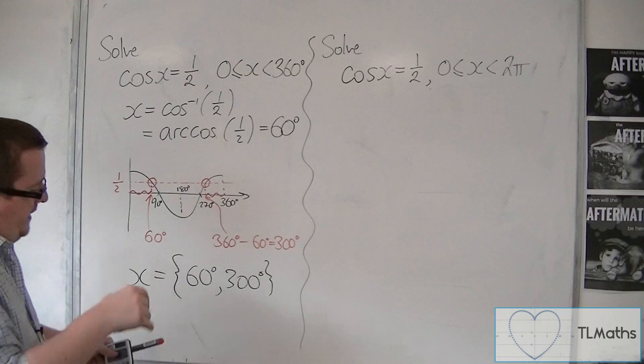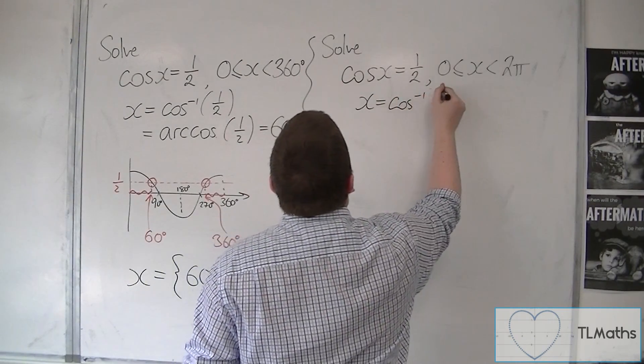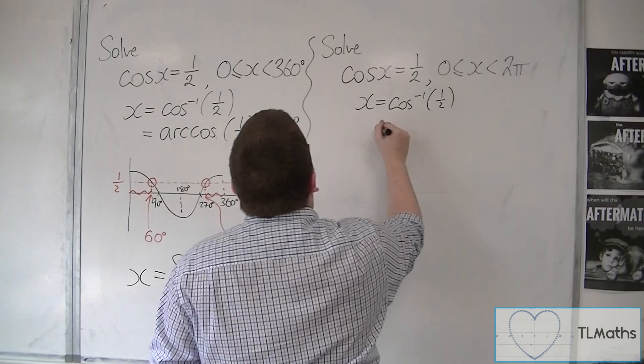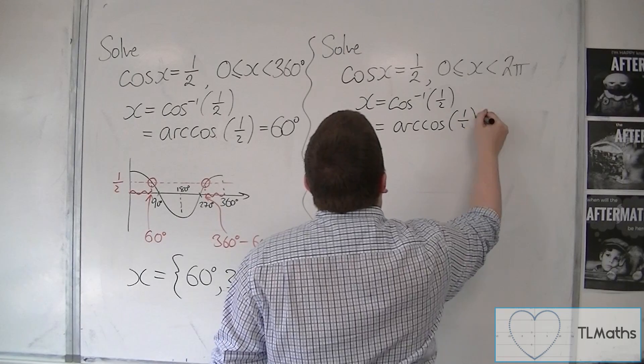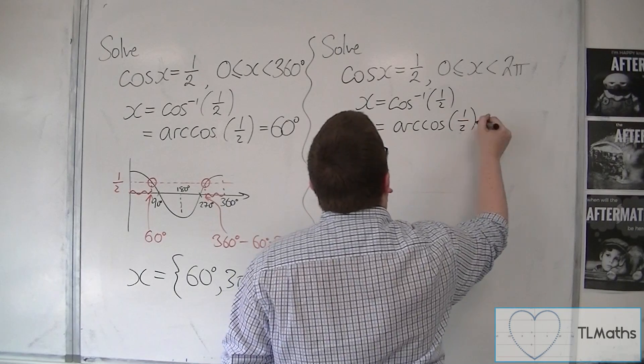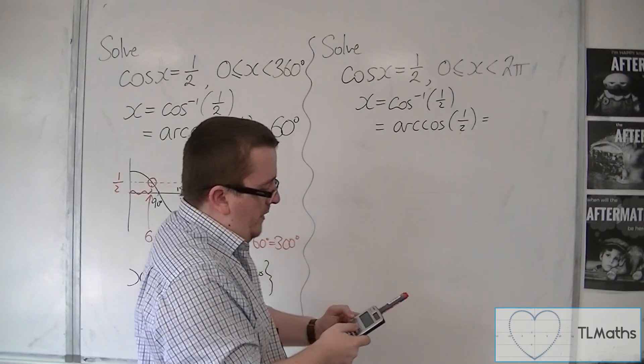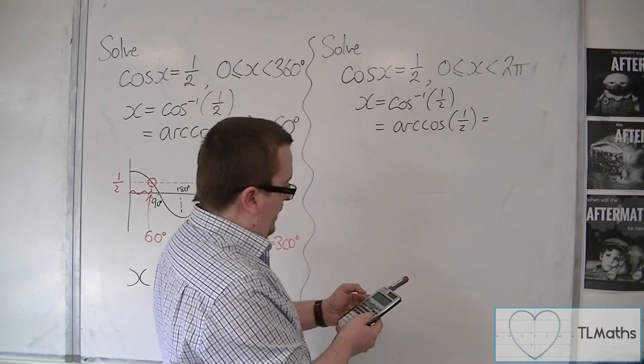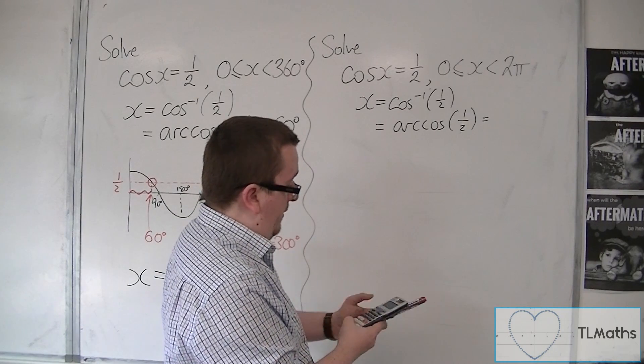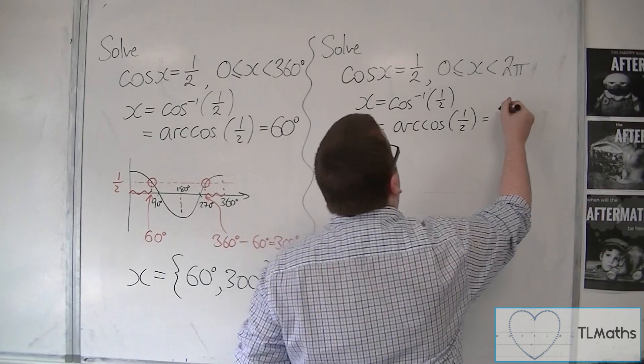Now, in radians, much the same process. X is equal to the inverse cos of 1 half, which is arc cos of 1 half. Now we've got to put our calculator into radians. So shift mode gets us into setup, the number 4 for radians. So inverse cos of 1 half is 1 third of pi, or pi over 3.